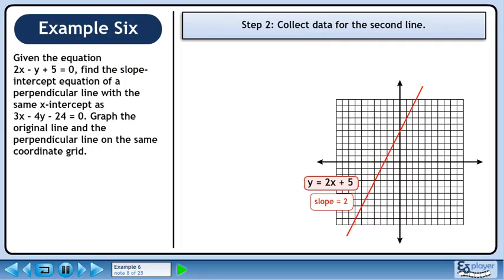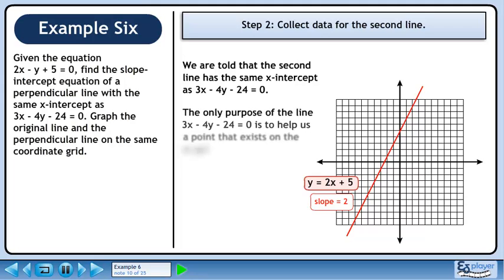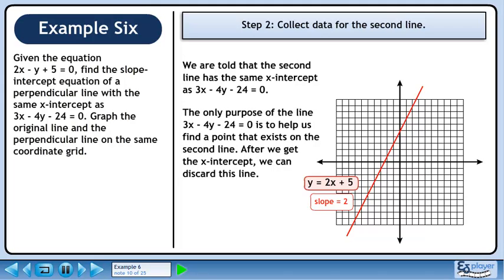In step 2, collect data for the second line. We are told that the second line has the same x-intercept as 3x minus 4y minus 24 equals 0. The only purpose of the line 3x minus 4y minus 24 equals 0 is to help us find a point that exists on the second line. After we get the x-intercept, we can discard this line.